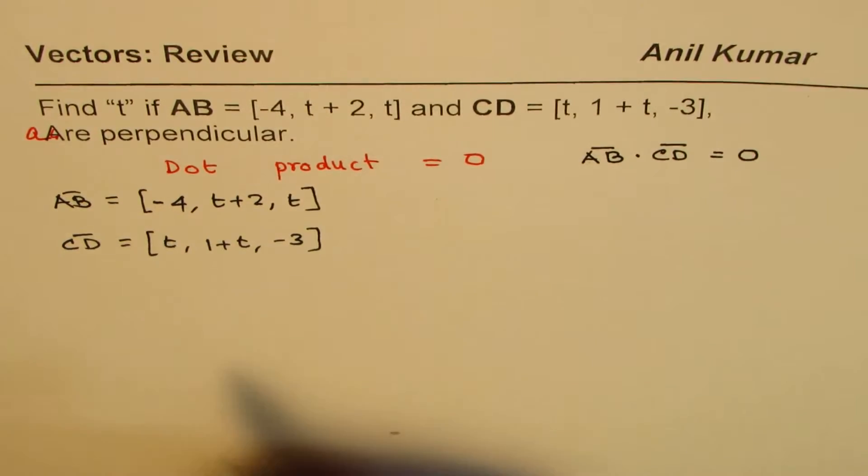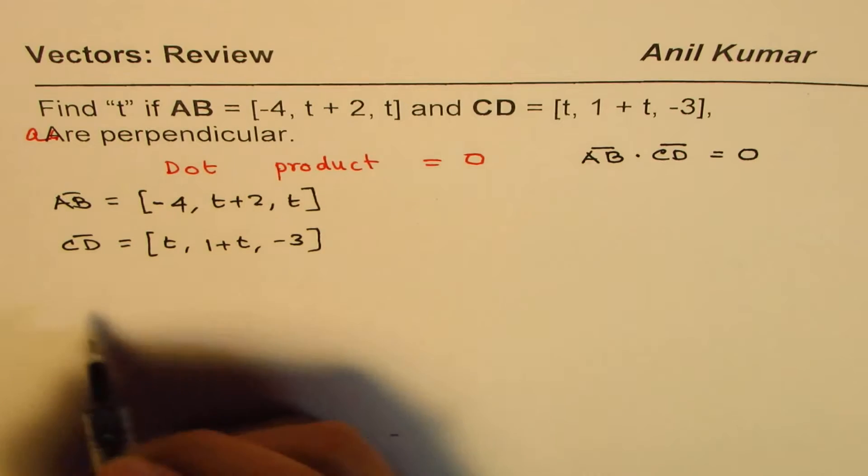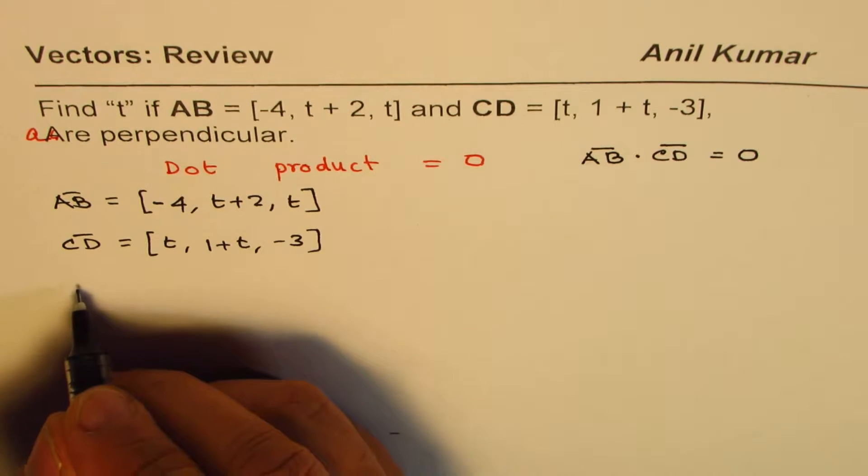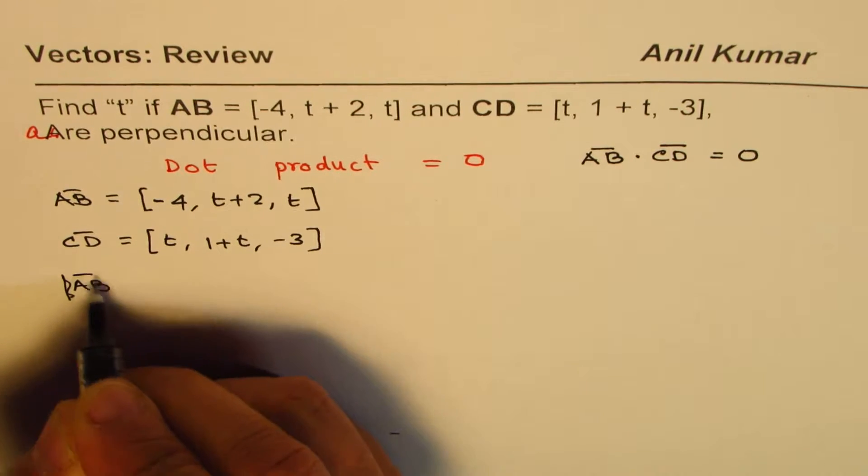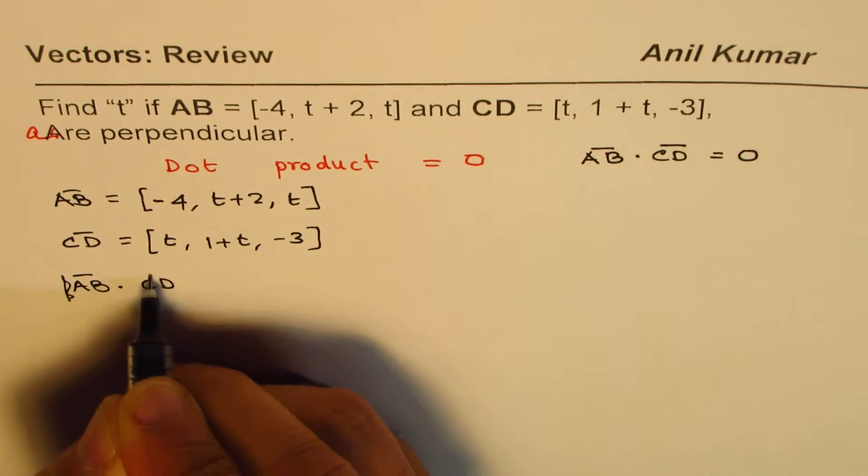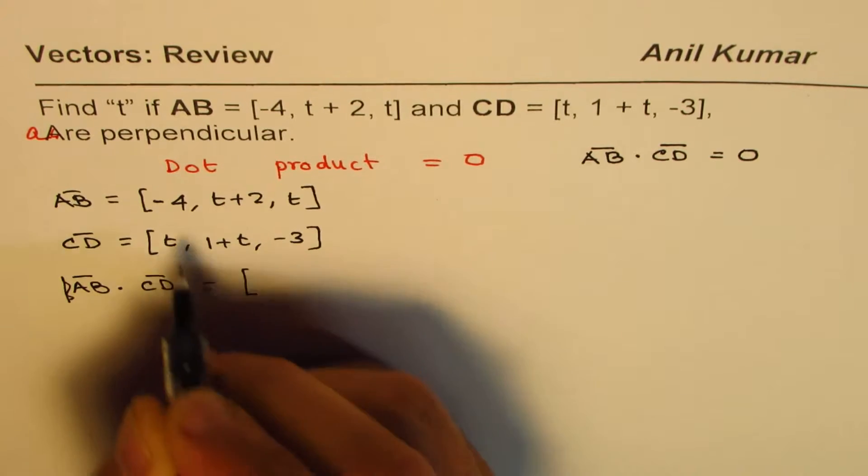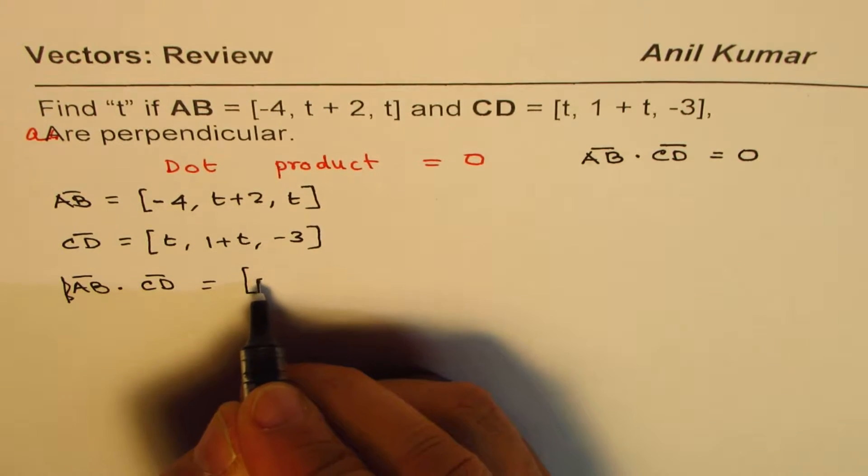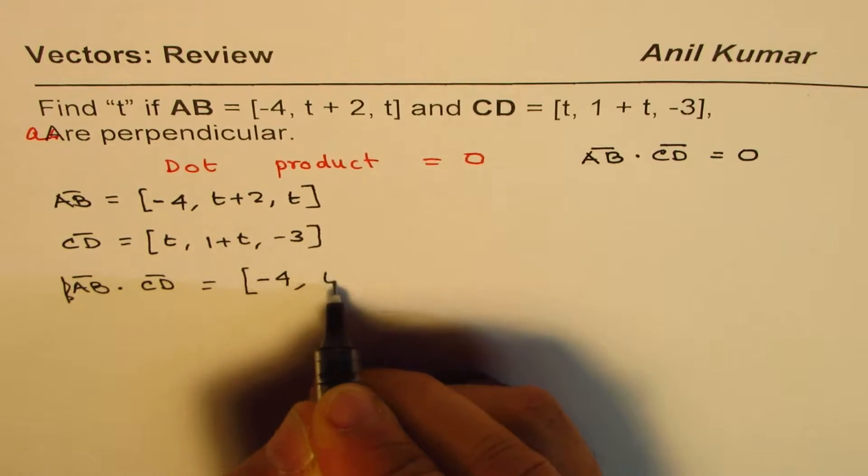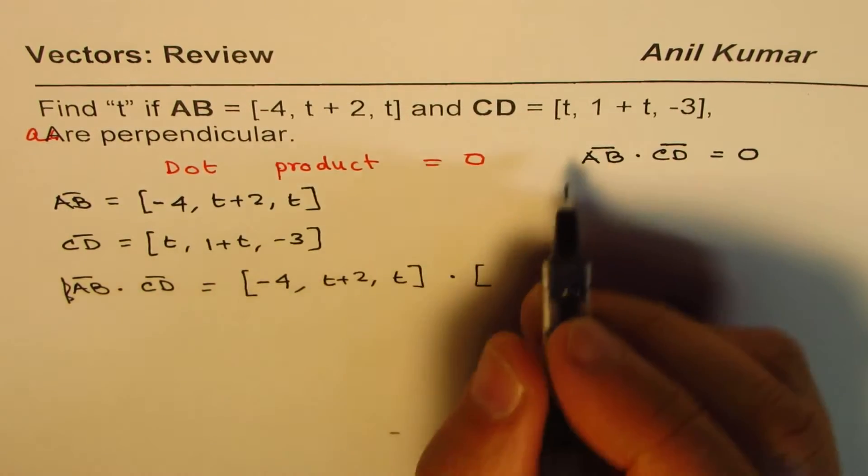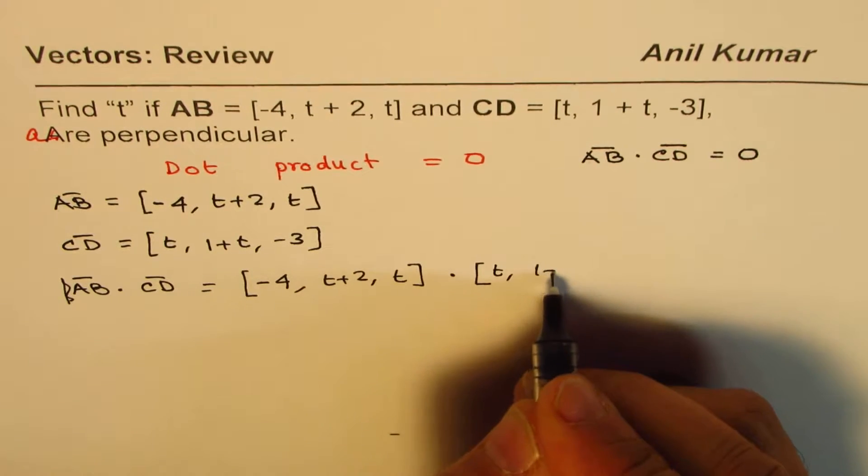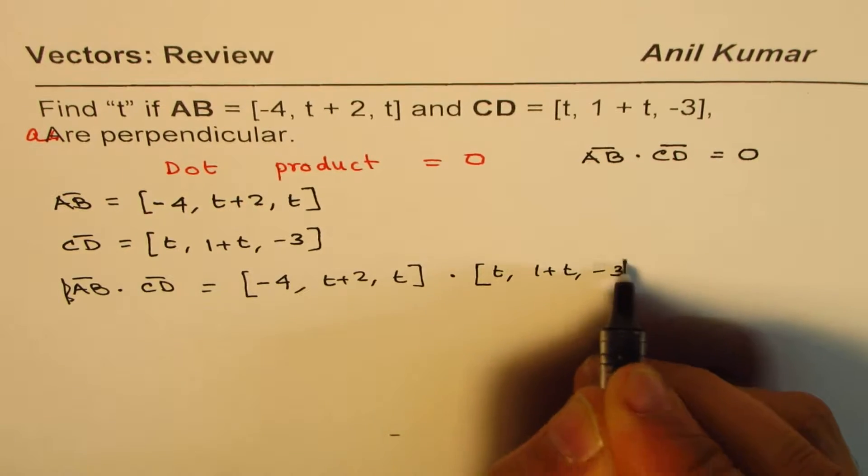So, we need to find the dot product. Let's write down the dot product. AB dot CD will be equals to minus 4, t plus 2, t dot t, 1 plus t, minus 3.